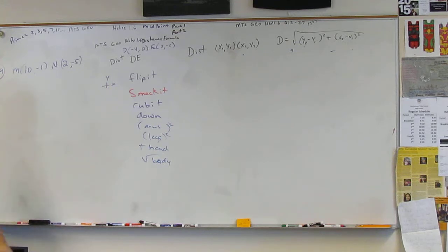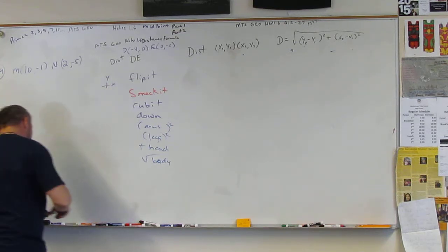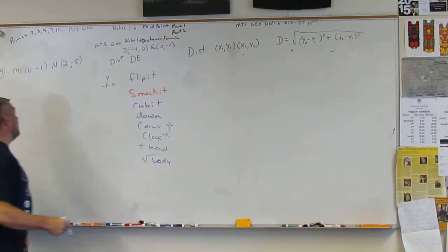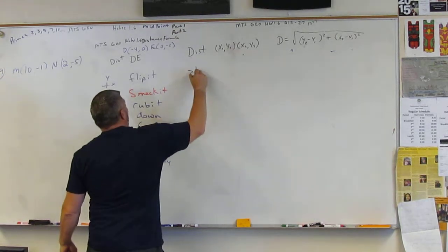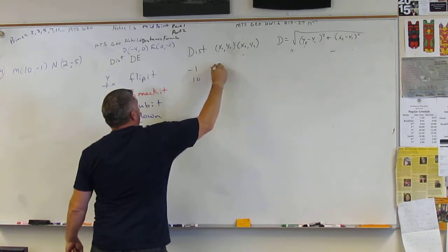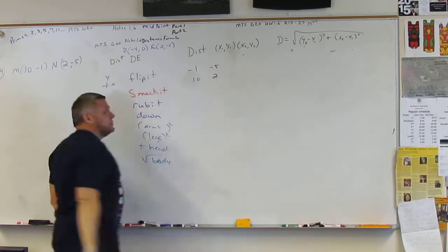Okay, so again, we are going to flip it. We have negative 1 over 10, negative 5 over 2, okay?